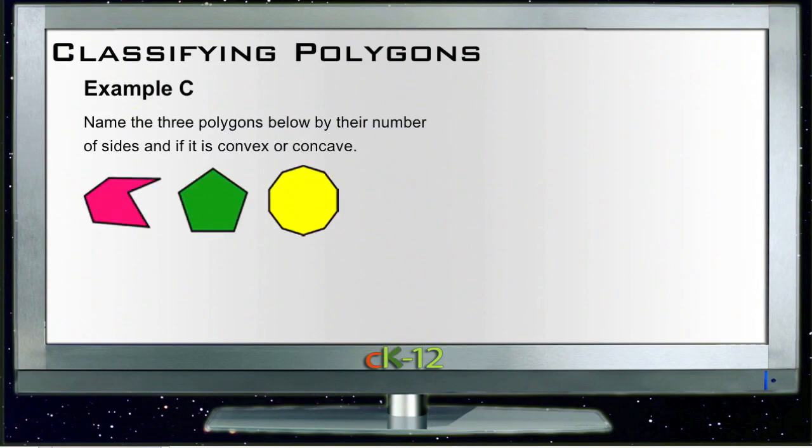Okay, then let's take a look at example C. Example C says, name the three polygons below by their number of sides, and whether they are convex or concave.